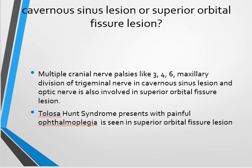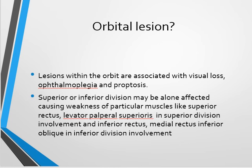Cavernous sinus lesions cause involvement of the third, fourth, and sixth cranial nerves, and the maxillary division of the trigeminal nerve causing pain. Lesions at the superior orbital fissure additionally involve the optic nerve. Tolosa-Hunt syndrome is a diagnosis of exclusion presenting with painful ophthalmoplegia, seen with lesions at the superior orbital fissure.